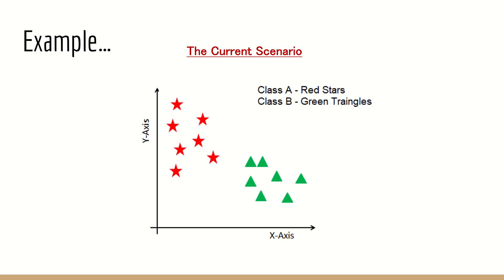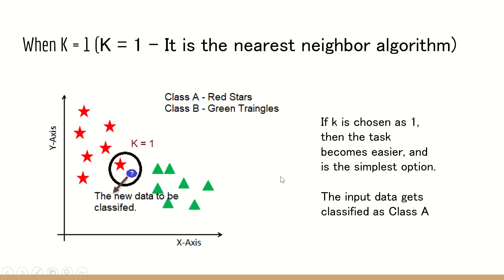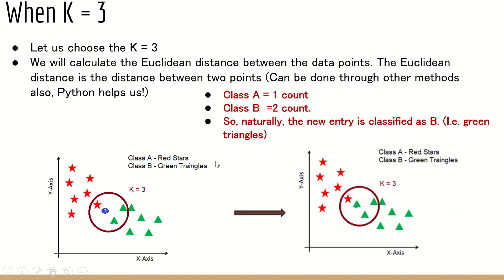Let me take an example. We have seven or eight red stars grouped as class A and green triangles grouped as class B. A new data entry needs to be classified as red star or green triangle. With K equal to 1, the closest point is identified — it is a red star, so the new entry is classified as class A. However, we haven't considered the rest of the data points, so this is a bad approach. Do not go with K value as 1.